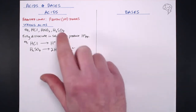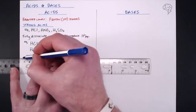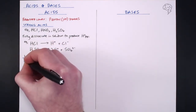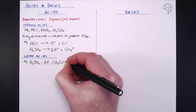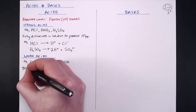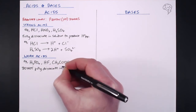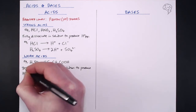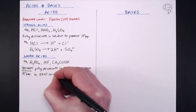So moving on, where does that leave us in terms of weak acids? Our examples of weak acids are phosphoric acid (H3PO4), hydrofluoric acid, and ethanoic acid. All organic carboxylic acids are classed as weak acids as well. What makes these different? They do not fully dissociate in solution to produce hydrogen ions. They are still proton donors, but you can't guarantee that every single molecule will dissociate and release hydrogen ions into solution. So what we can say is that they exist in equilibrium.